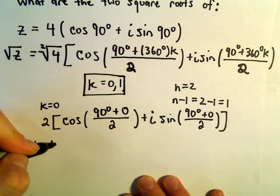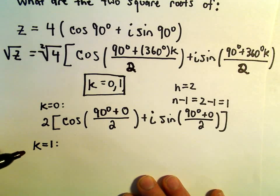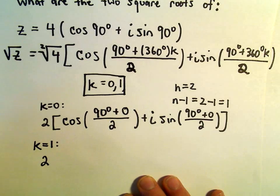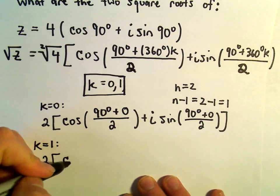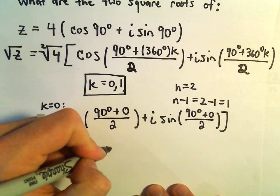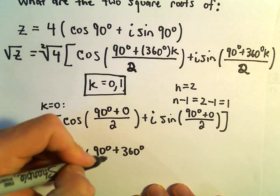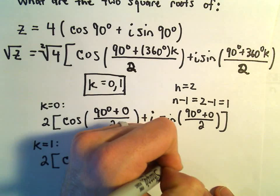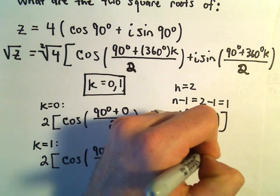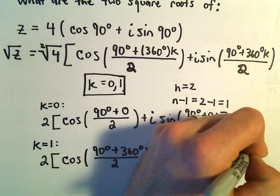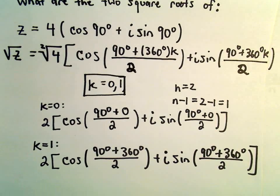The other root will be when k equals 1. Using k equals 1, out front we again have the square root of 4, which is just 2. Then, plugging k equals 1 into our formula, we have cosine of 90 degrees plus 360 degrees over 2, plus i sine of 90 degrees plus 360 degrees over 2. That would be the other one.